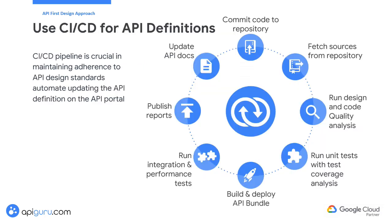A continuous integration and continuous deployment (CI/CD) pipeline is crucial for maintaining adherence to API design standards and automating the update of API definitions on the API portal. By integrating CI/CD practices into the API development workflow, organizations can ensure that their APIs remain consistent, reliable, and up-to-date. A CI/CD pipeline enables automated testing and validation of API design standards throughout development. By incorporating design checks and linting tools into the pipeline, teams can quickly catch deviations from established norms, ensuring all changes adhere to predefined API design guidelines and maintaining consistency and quality across the API.